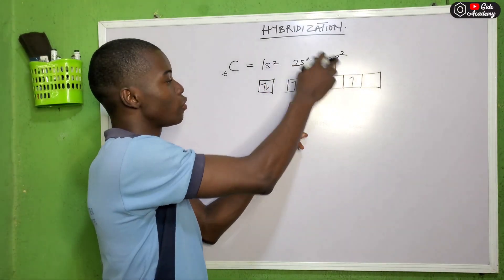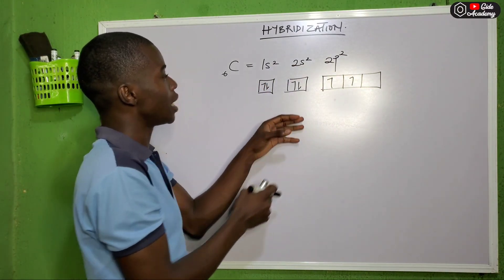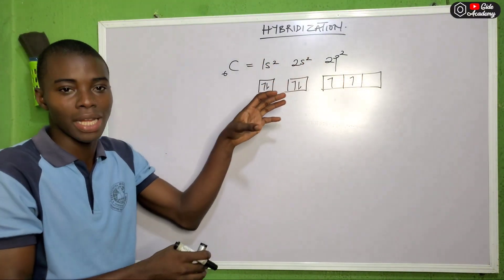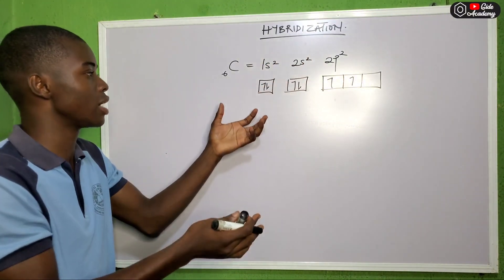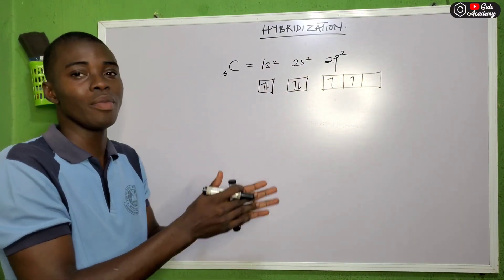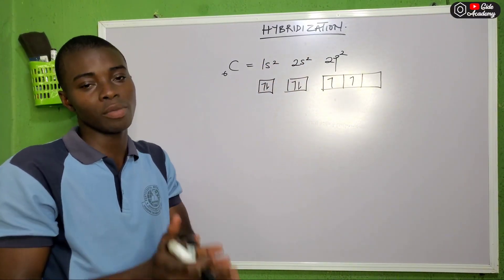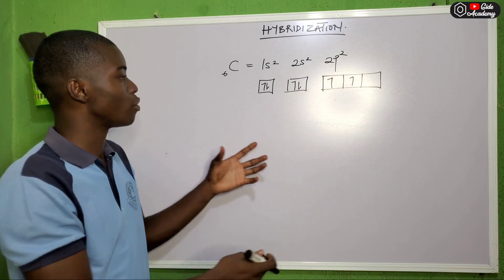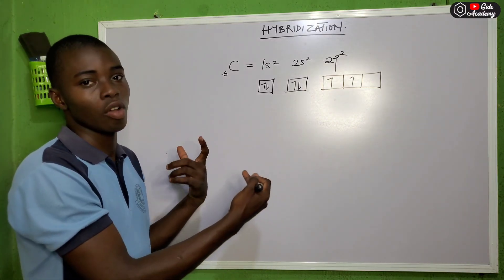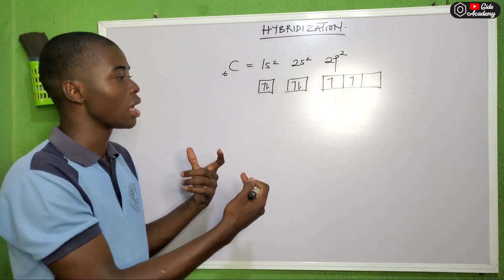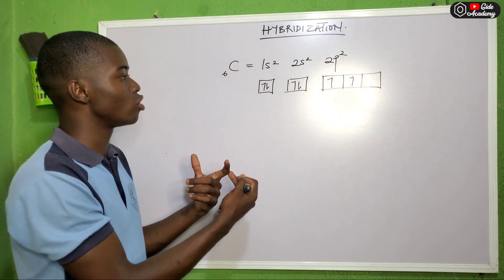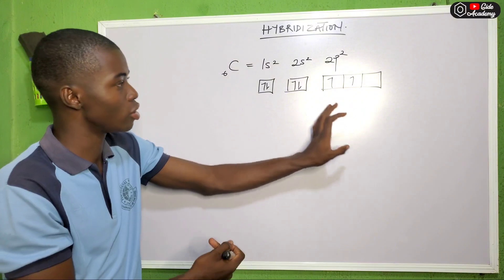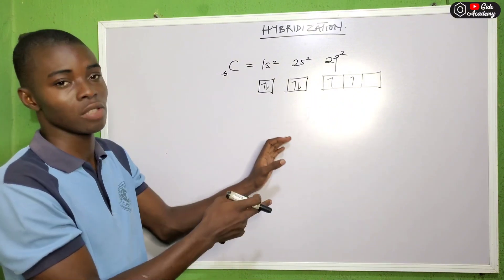Hybridization is the intermixing or blending of atomic orbitals to form a new hybrid orbital. You blend atomic orbitals, and at the end of the process, you form a new hybrid orbital.